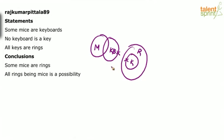Conclusion one: some mice are rings. In the basic diagram itself, some mice are rings is not satisfied — it doesn't follow. Conclusion two: all rings being mice is a possibility. Can all the rings be mice? Yes, it is possible. All the rings can go inside mice, and keys will also go inside mice. We only need to ensure that keys do not touch keyboards.